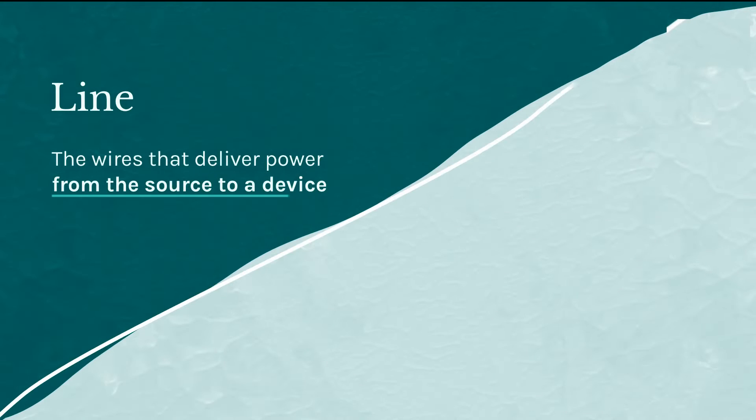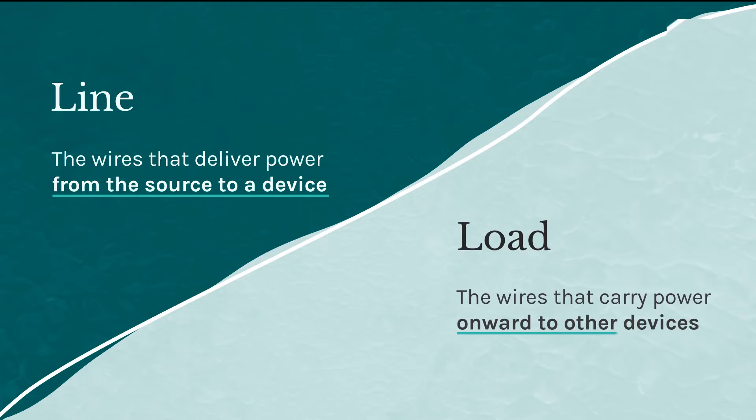In the electrical trades, line refers to the wires that deliver power from the source to a device, and load refers to the wires that carry power onward to other devices further along the circuit.